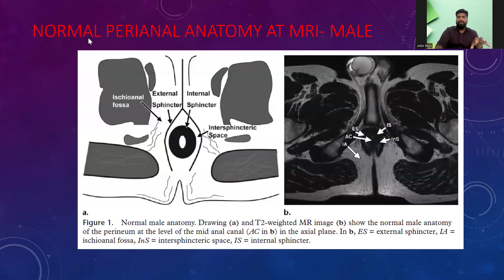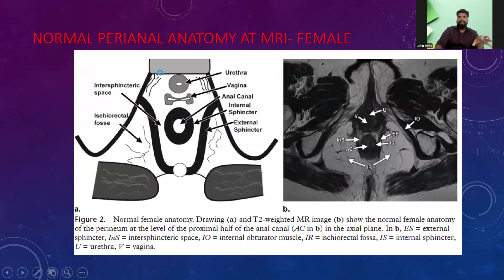Normal perianal anatomy is shown here in a representative diagram. The structures include the internal sphincter, the external sphincter, the intersphincteric space, and the ischiorectal fossa. This is the axial section. In females, we have the urethra and vagina, the anal canal, the internal sphincter, the intersphincteric space, and the external sphincter.